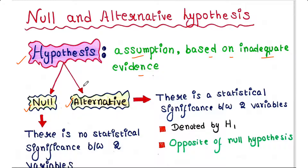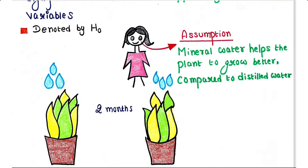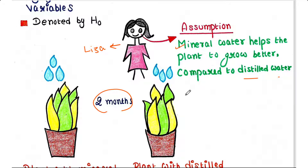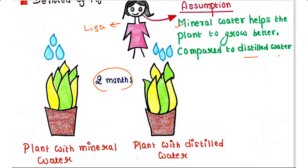Before talking about null and alternative hypothesis, we will visualize an experiment. This is Lisa. She assumes that mineral water helps the plant to grow better compared to distilled water. To prove this hypothesis, she performs this experiment for two months. She watered one plant with mineral water and another plant with distilled water.